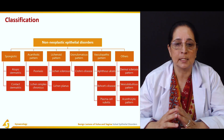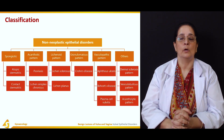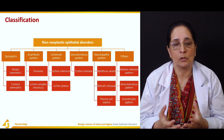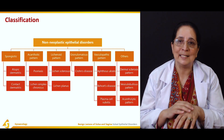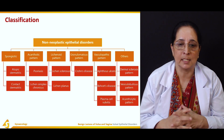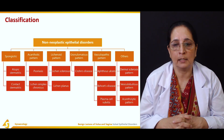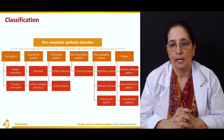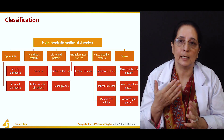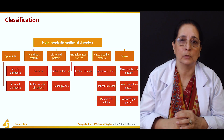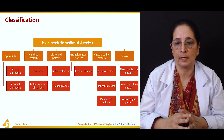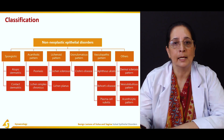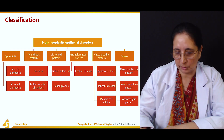Common disorders included in this classification are atopic dermatitis, contact dermatitis, psoriasis — a skin disorder with white scaly lesions that is becoming very common — lichen sclerosis, lichen planus, Crohn's disease, and aphthous ulcers, in which ulcers are present in the mouth and esophagus. These are all the non-neoplastic epithelial disorders.